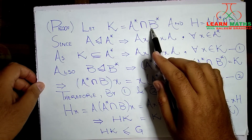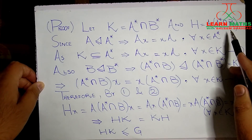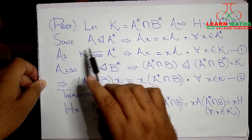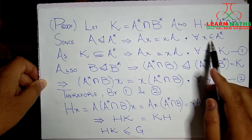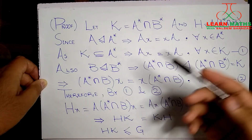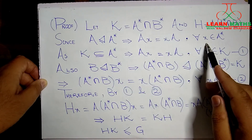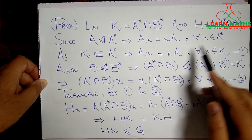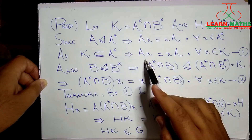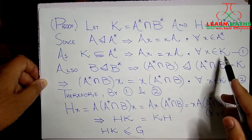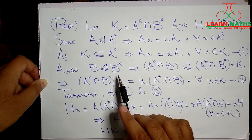We start by assuming: let K = A* ∩ B*, and H = A · (A* ∩ B). Since A is a normal subgroup of A*, we have aX = Xa for all X belonging to A*. This is the definition of normal subgroup. Since K is a subset of A*, we also have aX = Xa for all X belonging to K. Let us call this Result 1.